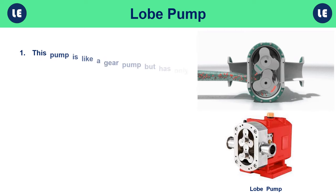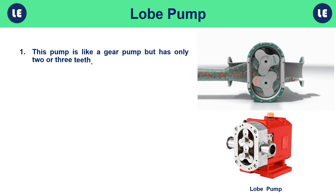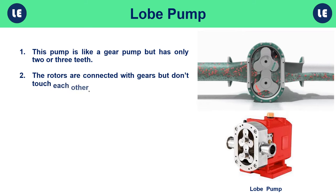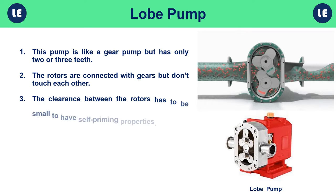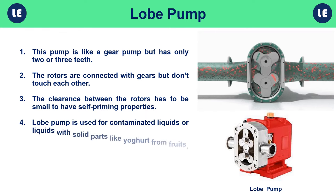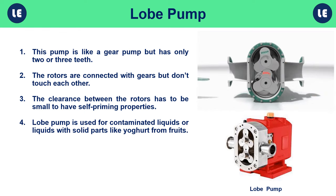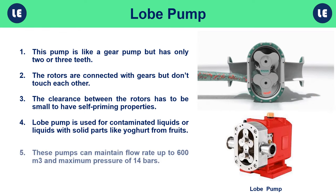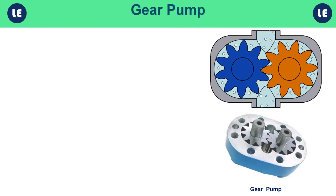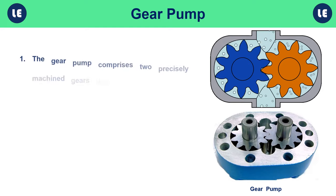A lobe pump is like a gear pump but has only two or three teeth. The rotors are connected with gears but don't touch each other; the clearance between the rotors must be small to maintain self-priming properties. Lobe pumps are used for contaminated liquids or liquids with solid parts, such as yogurt with fruits. These pumps can maintain flow rates up to 600 m³ and a maximum pressure of 14 bar.